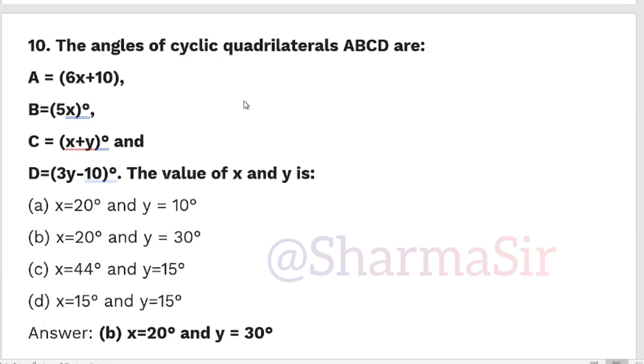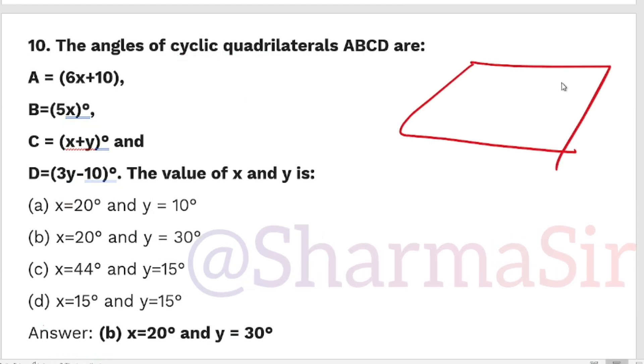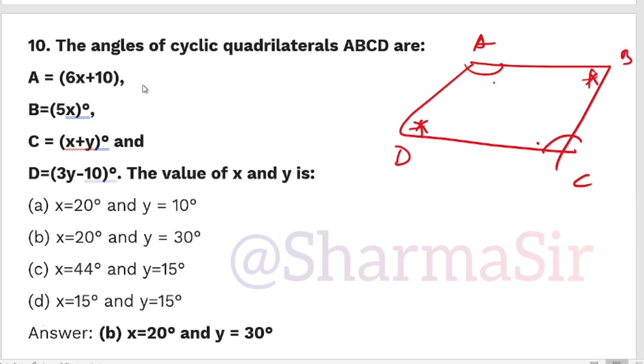The angles of cyclic quadrilateral ABCD are: A=(6x+10)°, B=(5x)°, C=(x+y)°, and D=(3y-10)°. The value of x and y is: In a cyclic quadrilateral, opposite angles sum to 180°. So A+C=180 and B+D=180. Setting up: 6x+10 + x+y = 180, which gives 7x+y=170.